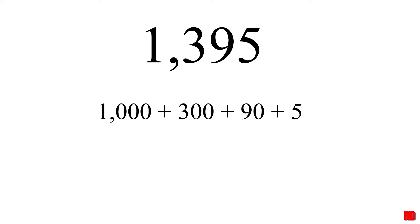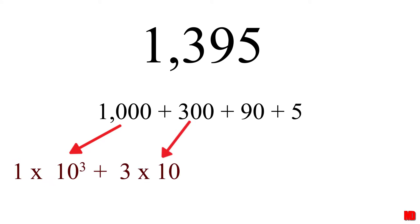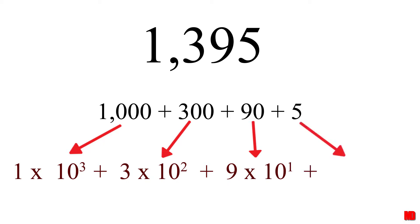You're no longer in elementary school, and you've had some more education since then, so let's use scientific notation to rewrite the expanded form. 1,000 is 1 times 10 to the third. 300 is 3 times 10 to the second. 90 is 9 times 10 to the first. And 5 is 5 times 10 to the zero.